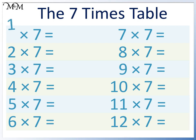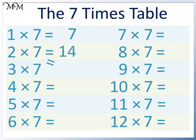1 times 7 is just 7. 2 times 7 is 7 plus 7, which is 14. 3 times 7 equals 21. We can remember that 2 plus 1 equals 3.